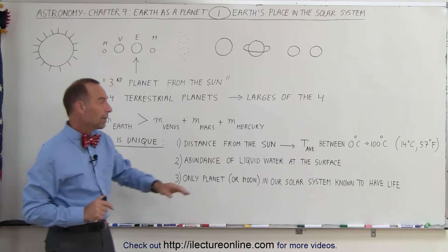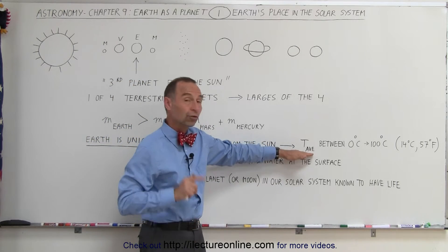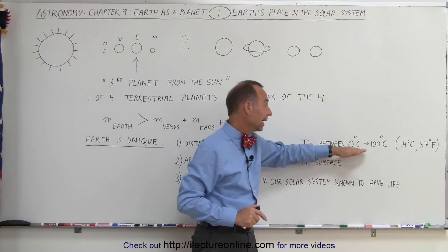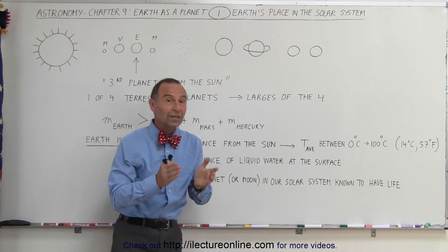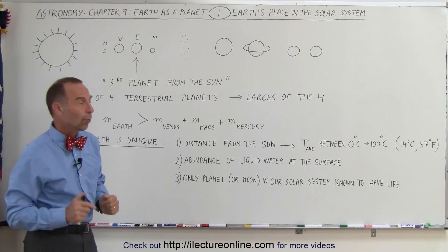But especially perfect because it puts the average temperature of the surface of the Earth to be between zero and 100 degrees centigrade, which means it's between the freezing and boiling point of water.